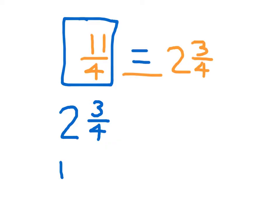Thinking of 11 divided by 4 — changing that improper fraction to a mixed number — we're now comparing both as mixed numbers, and then we can just compare them directly.